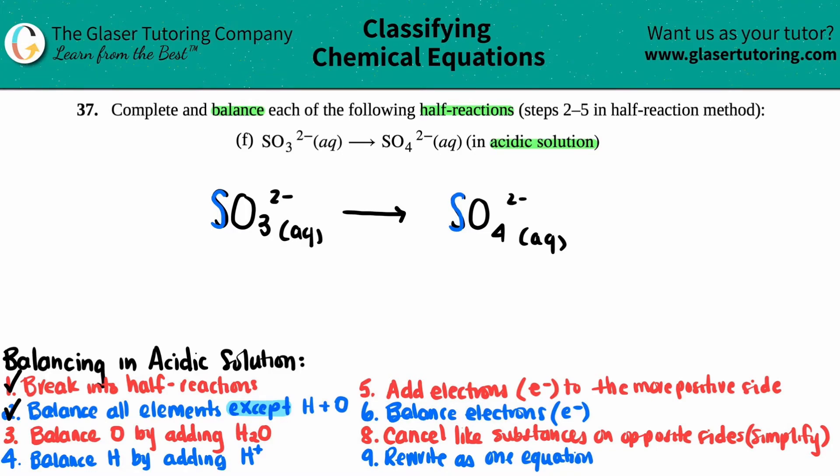Now we go to the third step. You want to always balance oxygen next. These steps are in a reason. It just makes it easier. So you're going to balance oxygen by adding H2O. And just know that if you need one oxygen on one side, you're going to add one H2O. So if you need to add two oxygens, you'll add two H2Os. Three oxygens you need, you need to add three H2Os.